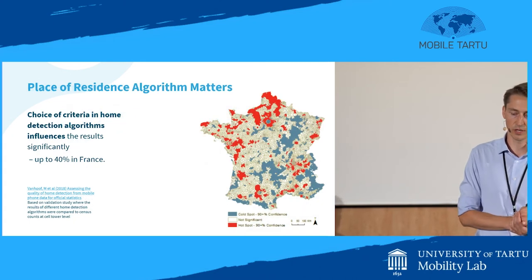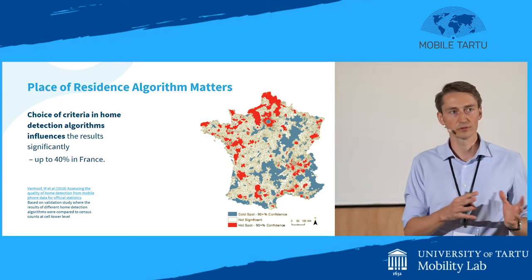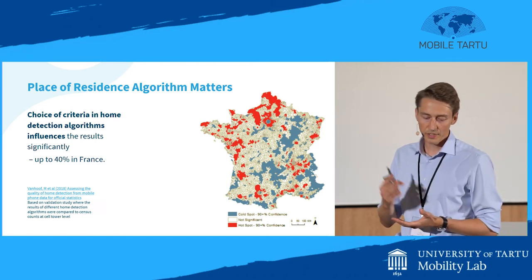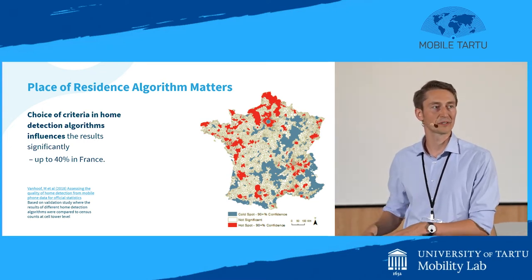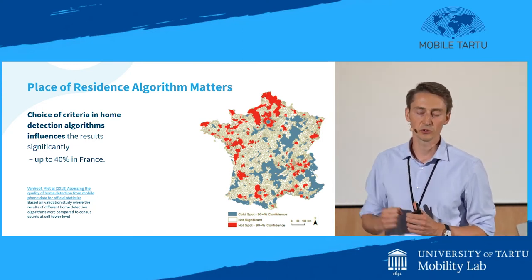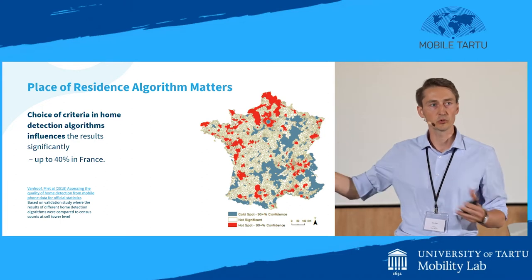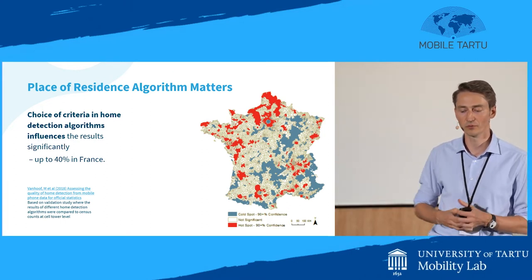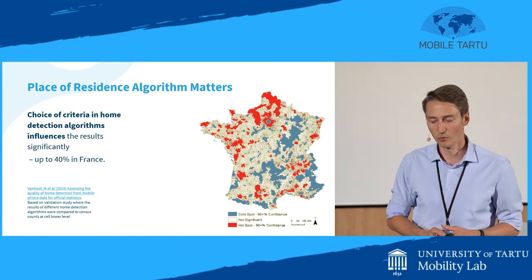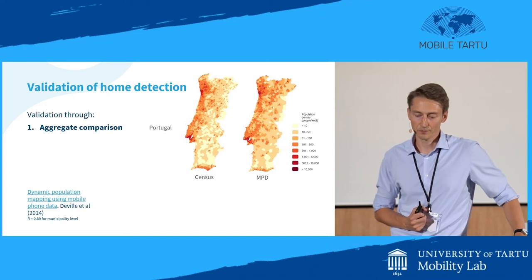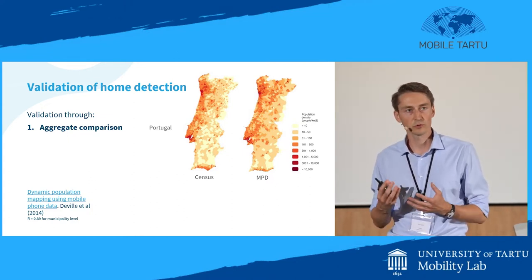Regarding how to select the place of residence — much research has been done, but some is misleading and leads to the wrong methods. Research data presented at Mobile Tartu in 2018 showed that the choice of criteria has a huge influence on results: up to 40% of the population might be displaced depending on the home detection criteria used — whether you use nighttime location or a more complicated model. Validation is needed, either through aggregate comparison as done by Deville et al. in Portugal, or through validation panels as done by Statistics Estonia, University of Tartu, and Positium.